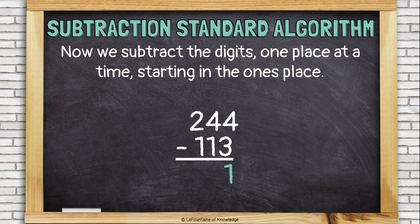Now, we'll subtract the tens place. Four tens minus one ten is three tens. And, finally, the hundreds, two minus one is one. And, here we see our answer, 131.